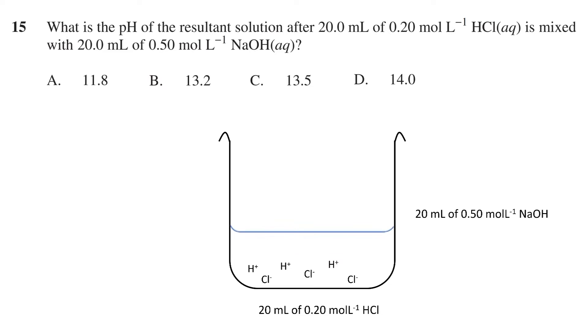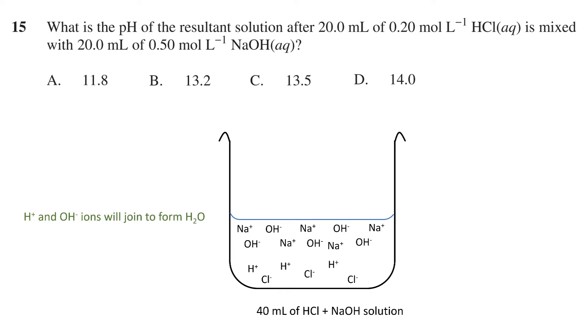Therefore, we end up with a 40 milliliter solution of both the HCl and NaOH. Now, all the ions can interact. This means the hydrogen ions and hydroxide ions conjoin to form water, and the resultant H2O just joins the aqueous layer, i.e., the water containing the ions.